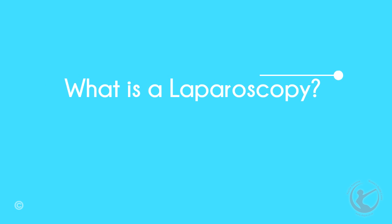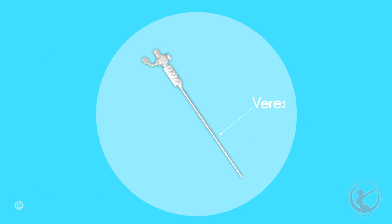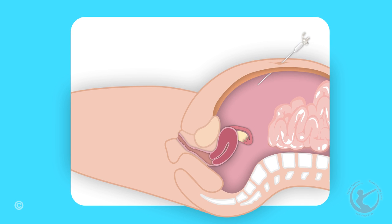Just what is a laparoscopy? A laparoscopy is an examination of your abdomen using a telescope. This is done under a general anaesthetic. There are two ways of inserting the telescope. I use an instrument called the Veress needle. A small incision is made in the belly button and the needle is passed through into the abdomen.